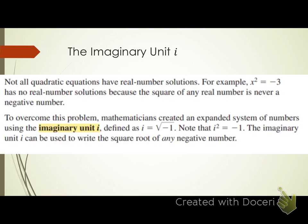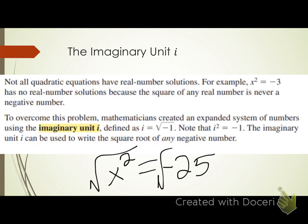The imaginary unit i. Not all quadratic equations have real number solutions. For example, x squared equals negative 3 has no real number solutions, because the square root of any real number is never a negative number. So if we have x squared equals negative 25, we would take the square root of both sides. In Algebra 1, you learned that we can't take the square root of a negative number, because no number times itself will give you a negative. Positive times positive gives you a positive, and negative times negative also gives you a positive. So in Algebra 1, we would have said this has no real roots.